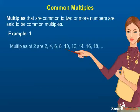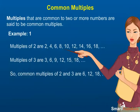Common multiples. Multiples that are common to 2 or more numbers are said to be common multiples. Example: Multiples of 2 are 2, 4, 6, 8, 10, 12, 14, 16, 18 and so on.